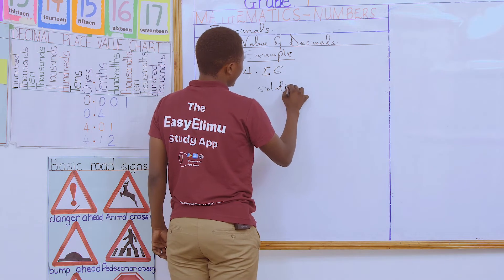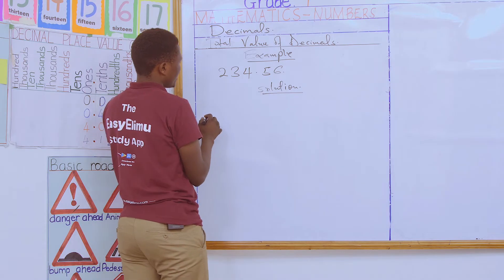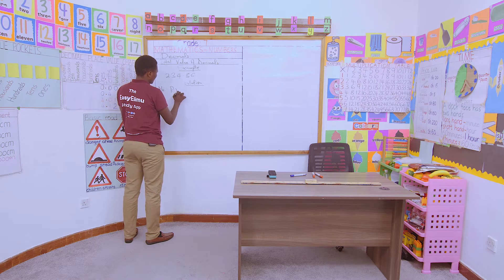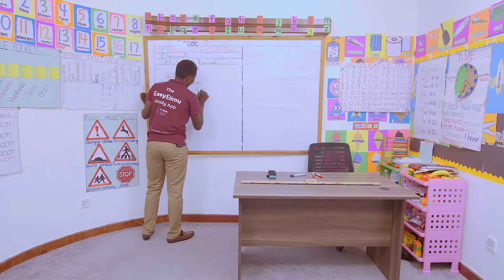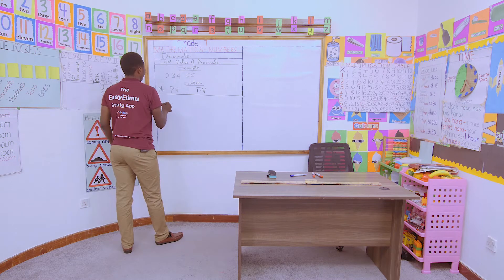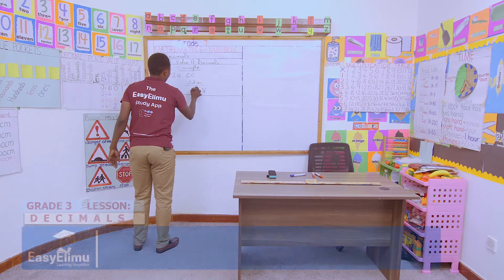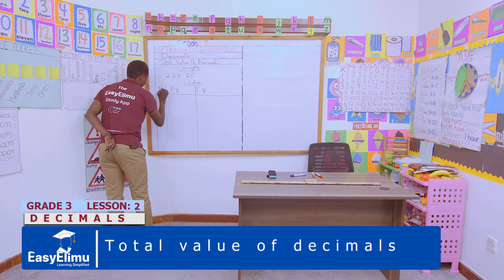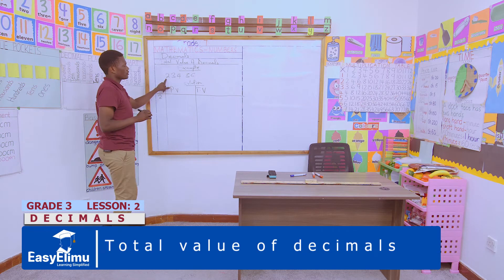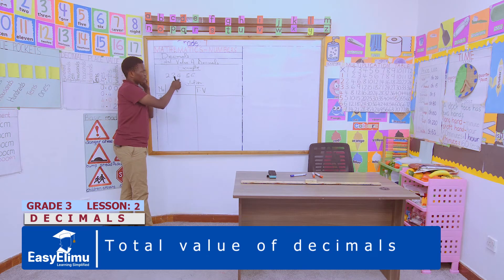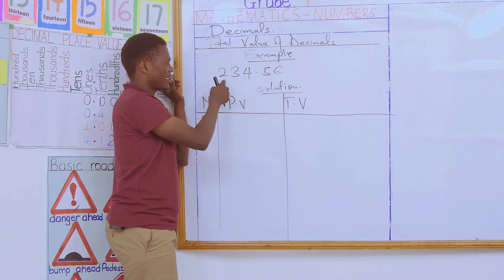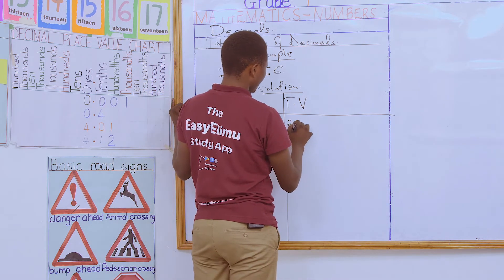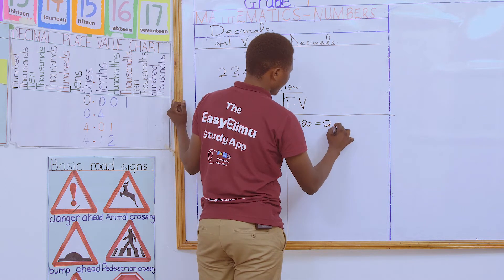Solution. So we are going to write the number here. We shall have the number, the place value — allow me to denote that by PV — then we shall have the total value, allow me to denote that by TV. So we are going to write our number vertically. Then allow me to start with the first digit, which is 2. The place value of digit 2 is 100s. So to get its total value, we multiply 2 times its place value, which is 100, and you get 200. The next digit is 3 — the place value of 3 is 10s, so we multiply 3 by 10 and that is 30.